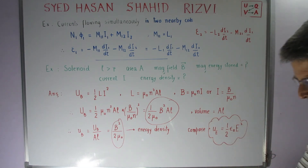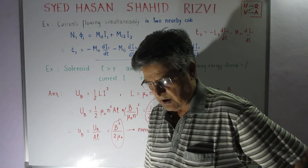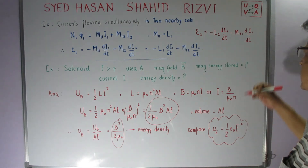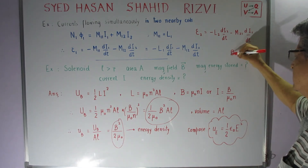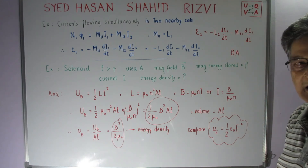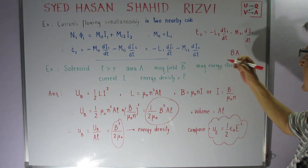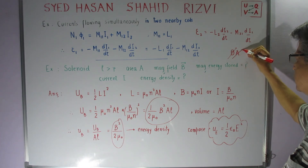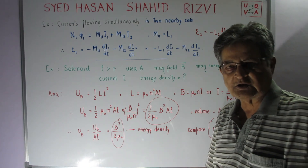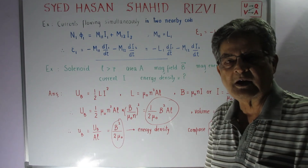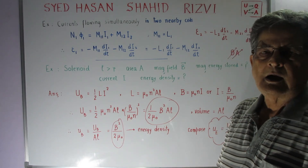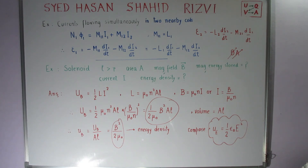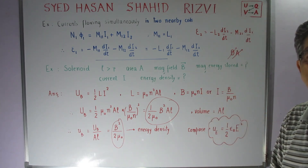This brings us to the end of this chapter. For an AC generator, if there is a magnetic field B and a coil of area A, then E = −dφ_B/dt. In an AC generator, B is kept constant and the effective area varies as A·cos(ωt), producing an alternating EMF. We will discuss this AC generator in detail in the next lecture.